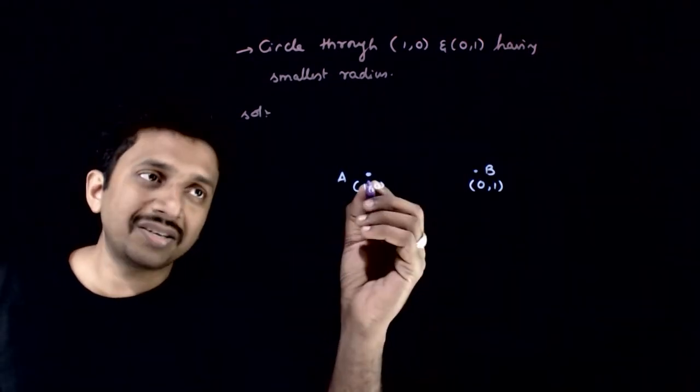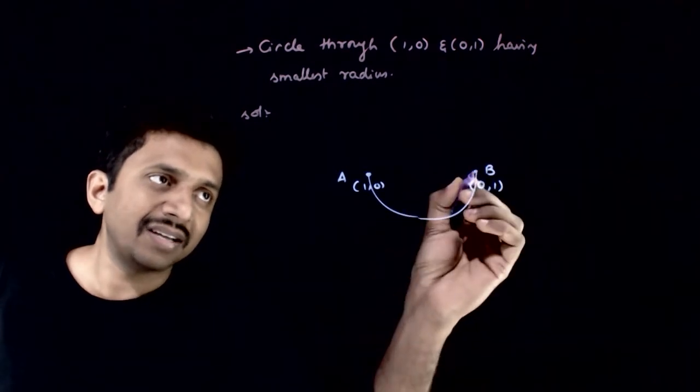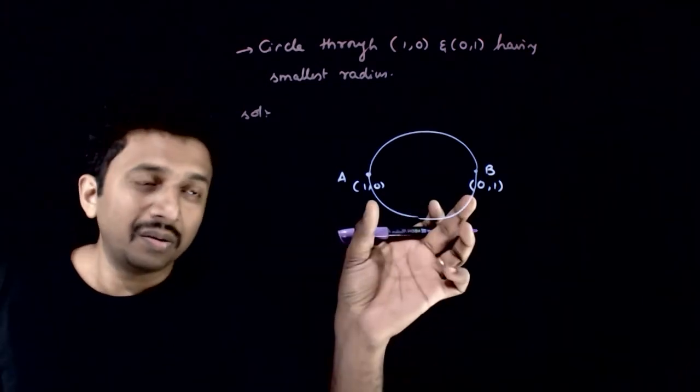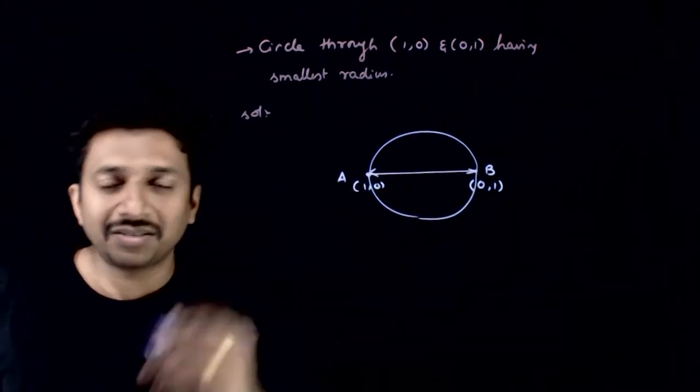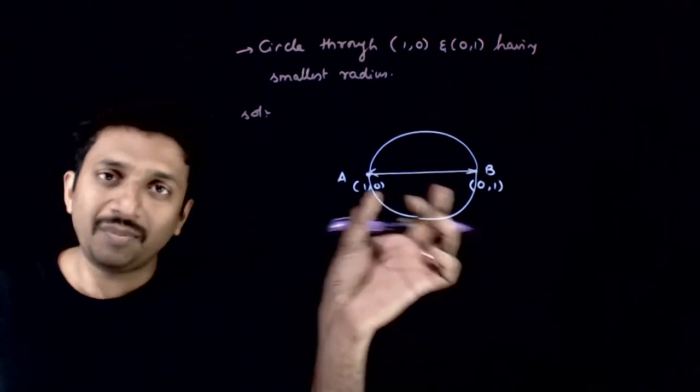What is the circle with smallest radius? It is nothing but the circle with A,B as diameter, right? That is the equation of the circle passing through these two points having the smallest radius. So you just need to find the equation of circle with A,B as diameter.